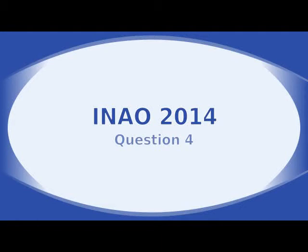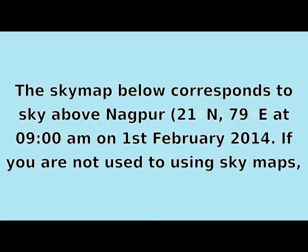Indian National Astronomical Olympiad 2014, Question 4. The sky map shows the sky above Nagpur, which is 21 degrees north, 79 degrees east, at 9 AM on 1st February 2014.